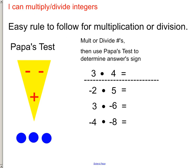First off, all you have to do is divide or multiply the numbers just like you always have. So 3 times 4 is 12. And if they're both positive, your answer is going to be positive.